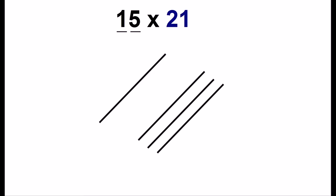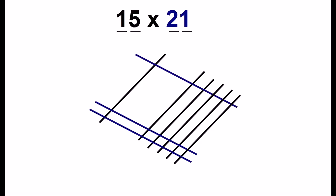We'll do another example. For 15 by 21, we start out by drawing one line. Then we'll leave a little bit of space and draw five lines. And for the other number, we draw lines in the other direction. So we draw two lines here and one line here.